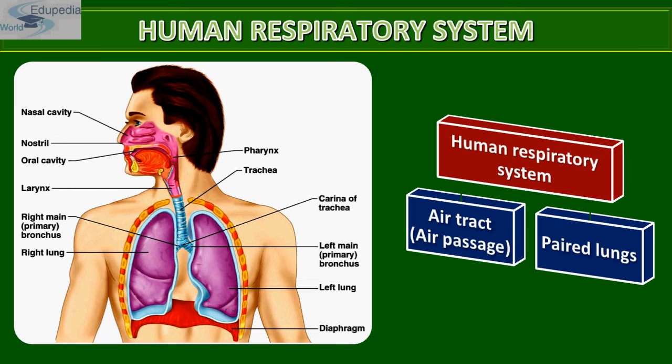The nasopharynx opens through the glottis of the larynx into the trachea. The larynx is a cartilaginous box which helps in sound production and is hence called the sound box. During swallowing, the glottis can be covered by a thin elastic cartilaginous flap called the epiglottis.